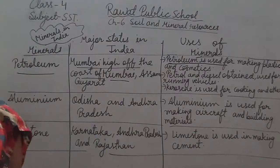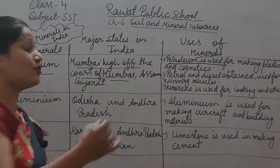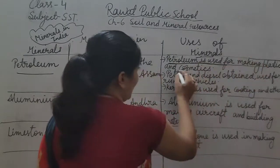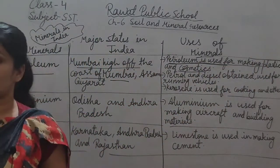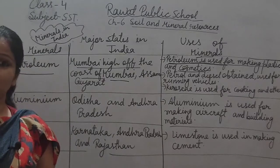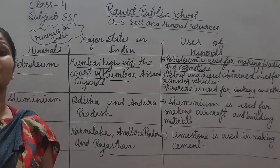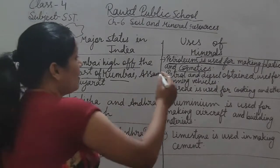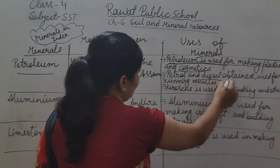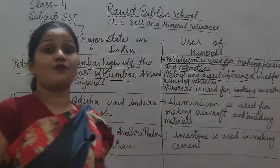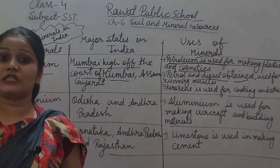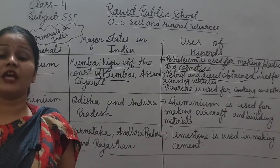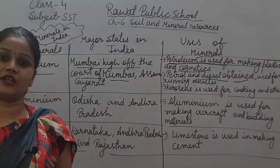What are the uses of petroleum? Petroleum is used for making plastics and cosmetics. Cosmetics means make-up items. Petrol and diesel are obtained from petroleum, and these are used for running vehicles.